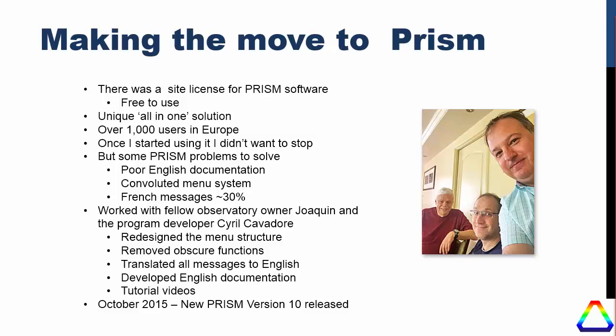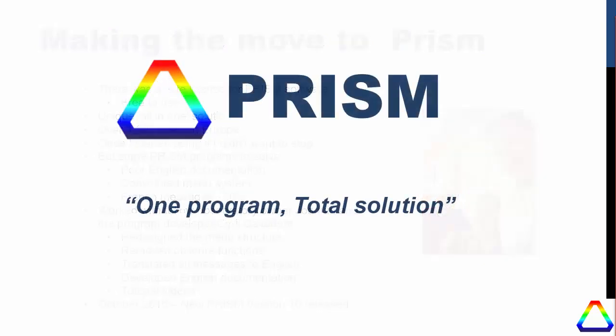There were some problems with the existing PRISM program at that time, about two years ago. It had very poor English documentation and a convoluted menu system, having been developed originally for French users by a French programmer — about 30% of the popup messages always seemed to appear in French. So I worked with fellow observatory owner Joachim and program developer Cyril to redesign the menu structure, rationalize it, remove obscure functions added for specific professional applications, translate all messages into English, develop English documentation, and create a series of tutorial videos. In October of last year the new PRISM version 10 was released.